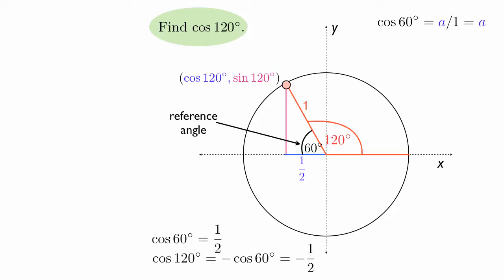So cosine of 120 degrees is going to go the reverse of, or the negative of cosine of 60 degrees, which is equal to negative 1/2.